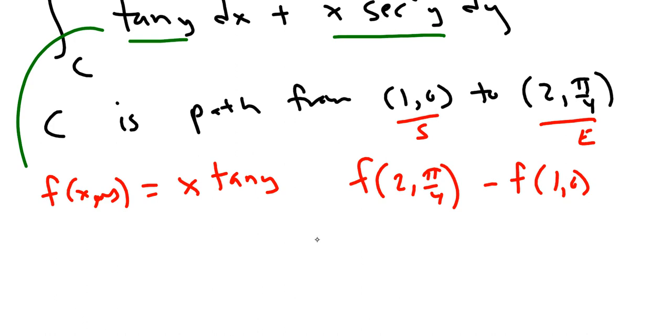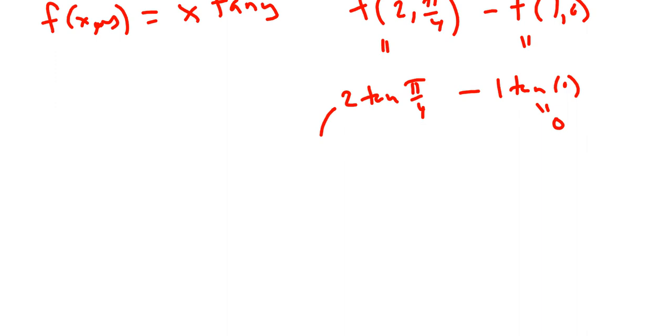So f(2, π/4), this piece would be 2 tangent(π/4). Over here, you can do f(1,0). So that would be minus 1 times the tangent of 0. Now the tangent of 0 is just 0, so that goes away. This piece over here is 2 times the tangent π/4, which is really just 1. So the answer to this line integral is just 2.